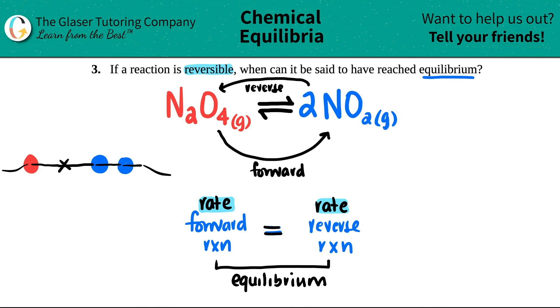So, think about it in tug-of-war. I hope that analogy kind of makes sense. But the overall answer is because of the rate. So, if a reaction is reversible, what can be said to have reached equilibrium?